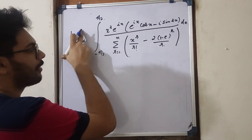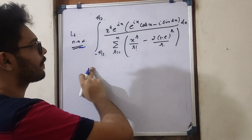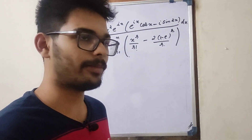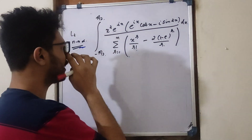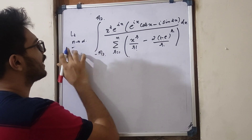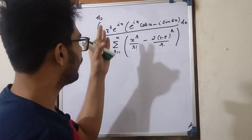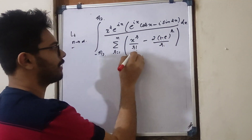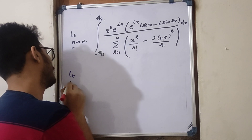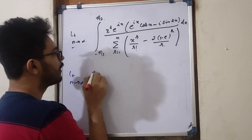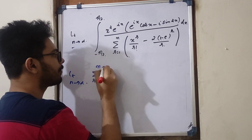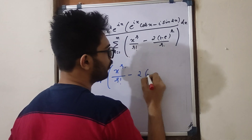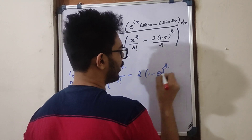What is the question? Limit is n tends to infinity. Limit is summation. Sigma r equal to 1 to n. x raised to r divided by r factorial, minus 2 into 1 minus e, all raised to r, divided by r.